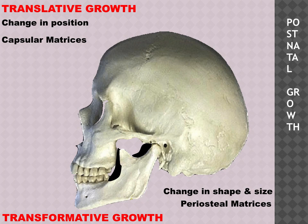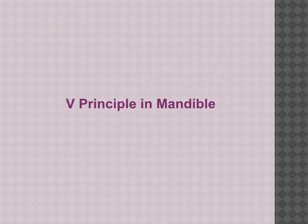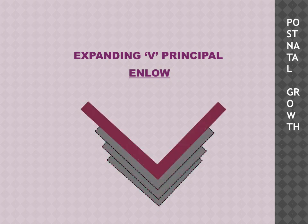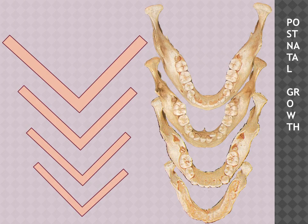That is how we correct skeletal problems with functional appliances using functional matrix theory, causing transformative growth and changing shape and size by inducing local changes in periosteal matrices. Next is the V principle in the mandible: just like the maxilla and palate grow in the shape of a V, the mandible also grows in an expanding V, widening with age from young to adult.